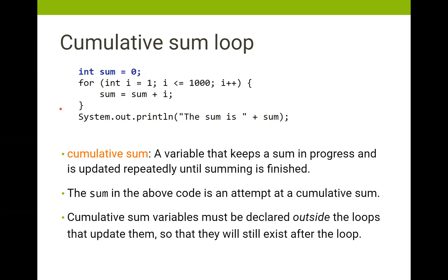This is the most simplistic form of a cumulative sum and it gives us the values of all the numbers between one and one thousand. You can see here we are adding i, which is our loop variable, into our sum value. The important thing is: declare sum above the for loop, accumulate the values inside the for loop, and when you're done you have your answer.